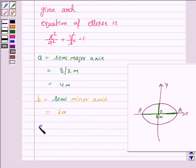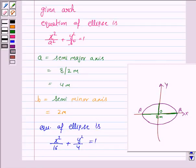So the equation of the ellipse is x squared upon a squared, where a is 4. So it becomes x squared upon 16 plus y squared upon 4 is equal to 1.